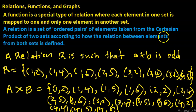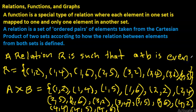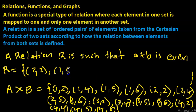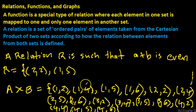What if I change the relation to a plus b is even? Then what elements would be in R? The elements in R would be those where the sum of a plus b gives an even number. Examples would be: two-two, one-five, two-four.